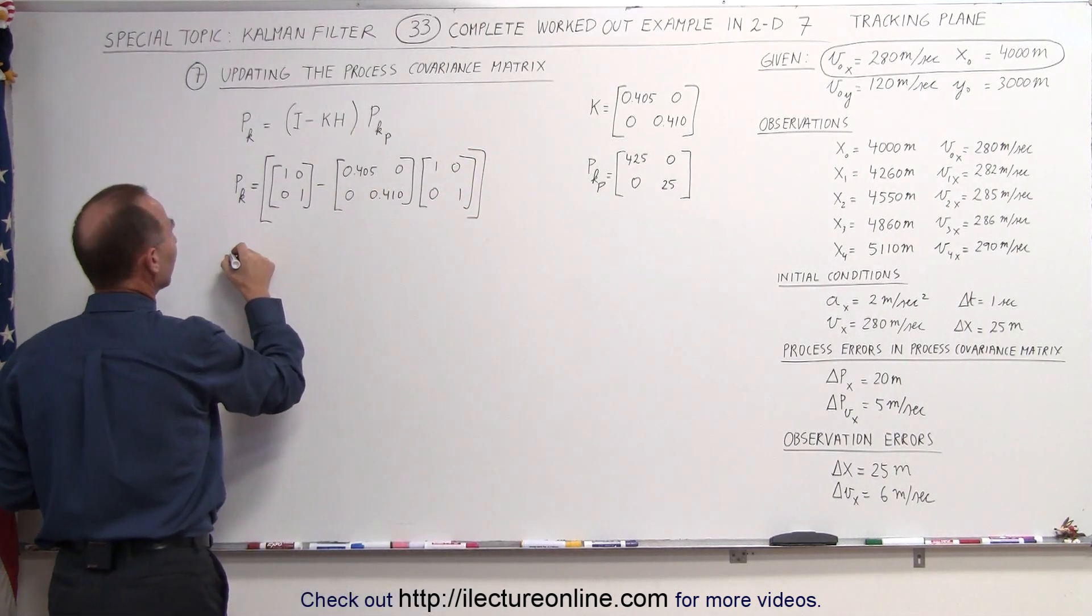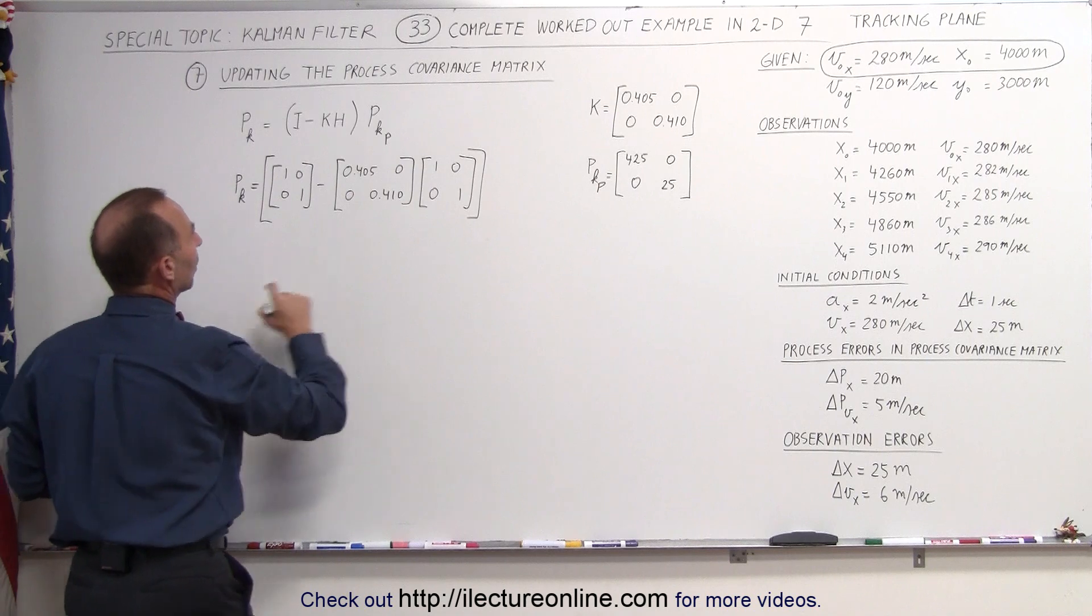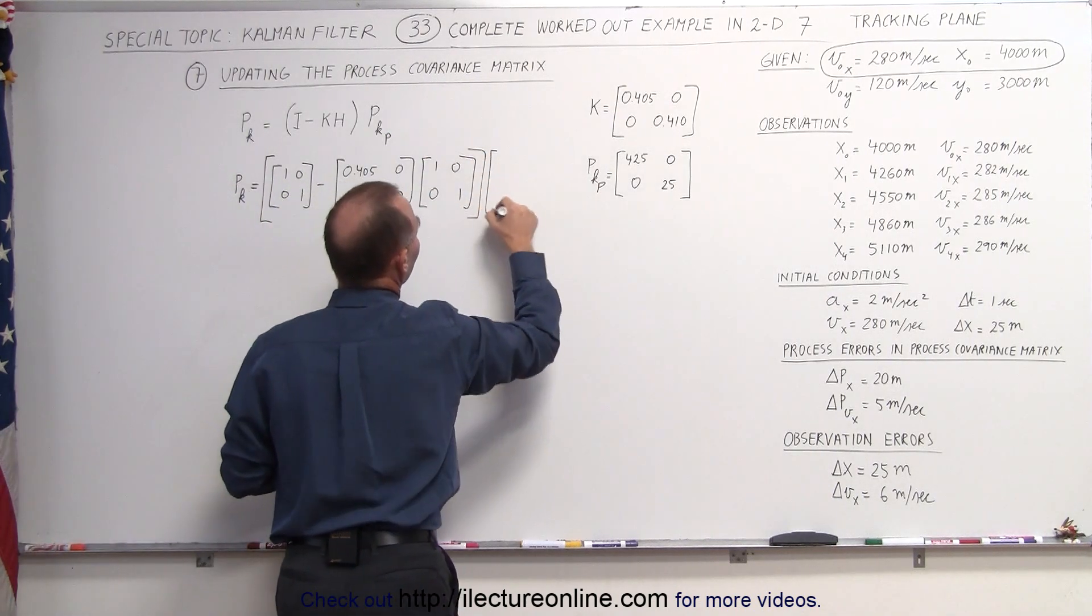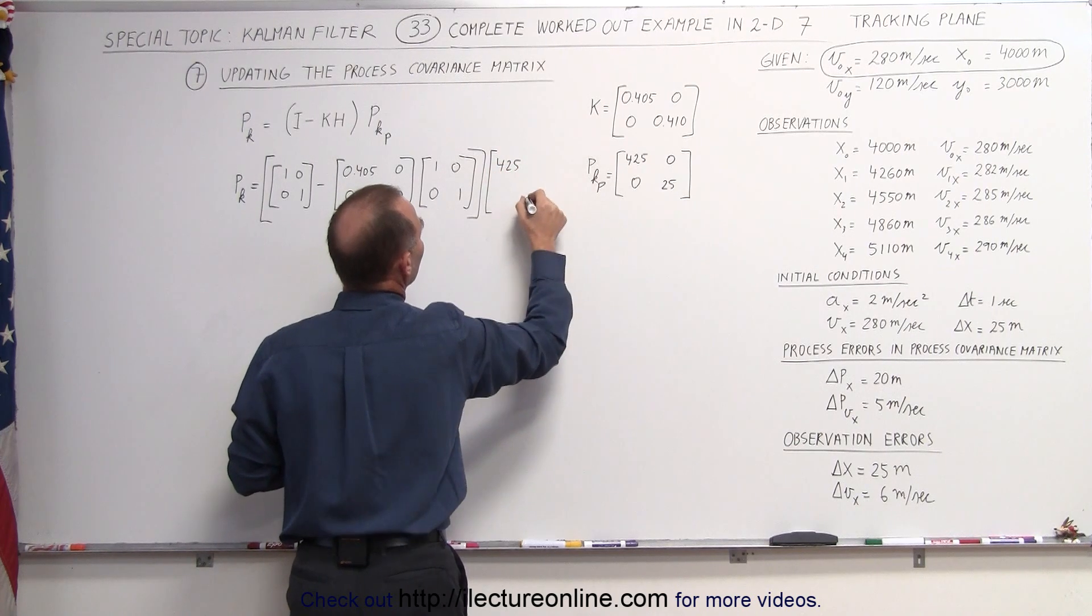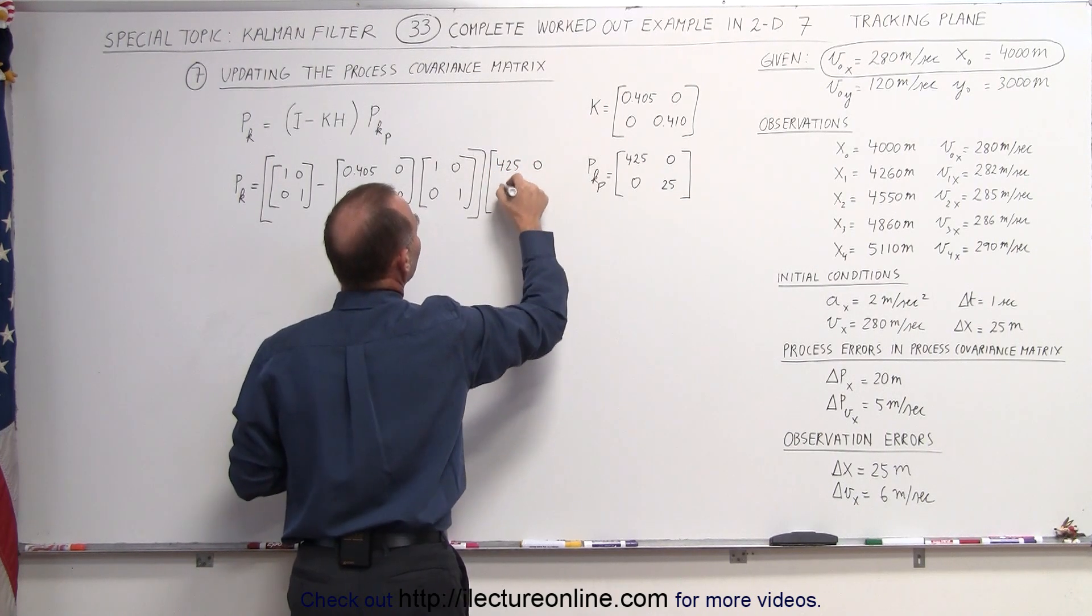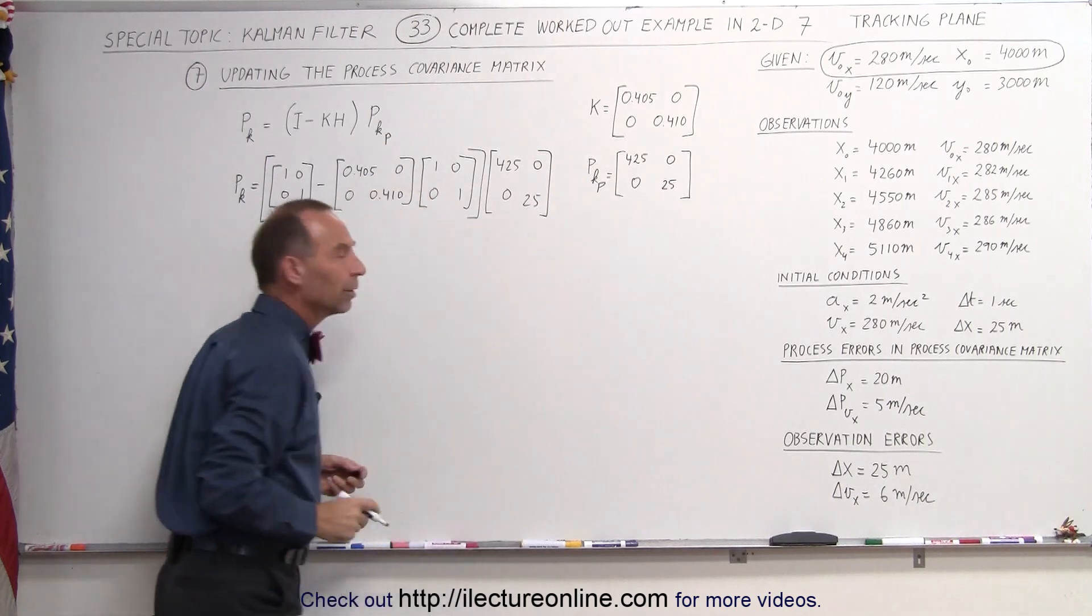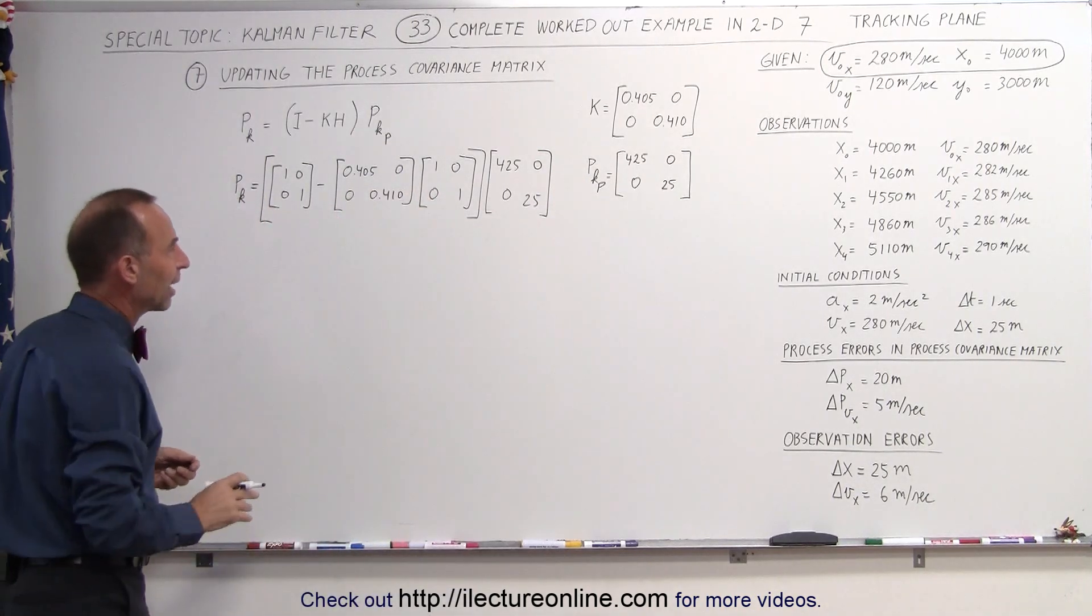Which means that we end up with the process - oh, I have to multiply that times, almost forgot - multiply that times the previous process covariance matrix. Remember, we left off the cross terms for now, we're going to do that in a later example.